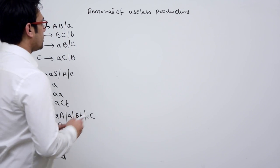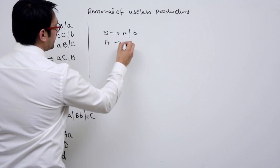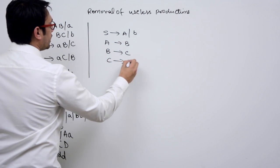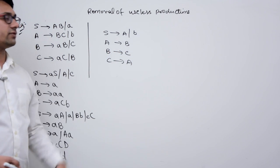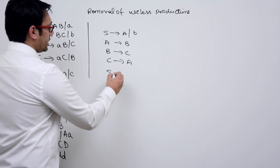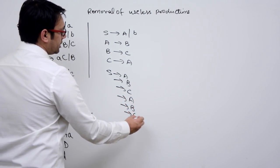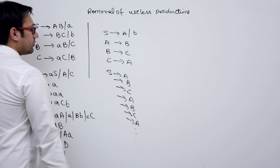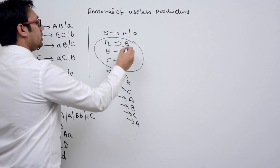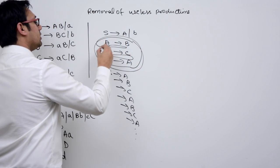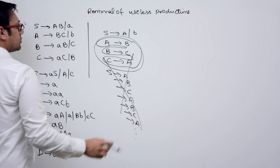For example, if you have a production like: S derives 'a' or small 'b', A derives B, B derives C, and C derives A. If you take the path S derives A, from A you can derive B, from B you can derive C, from C you can derive A again, then A derives B, B derives C, C derives A — and so on. You will not be able to generate any string. There is a loop going on: A to B, B to C, C to A, back to A to B.